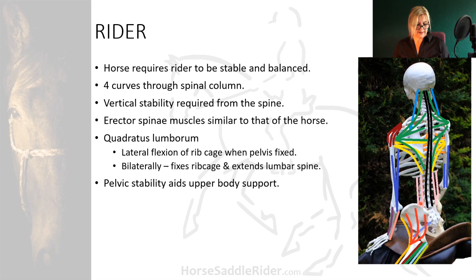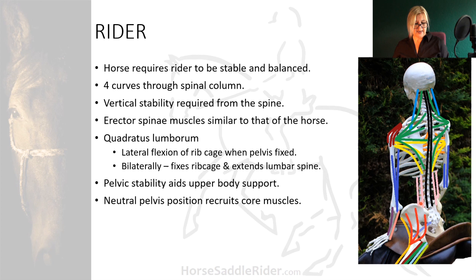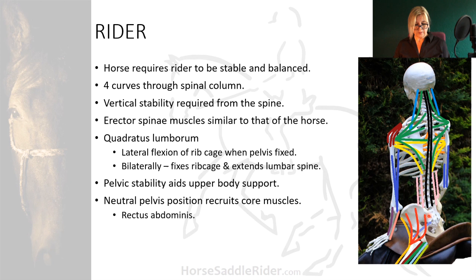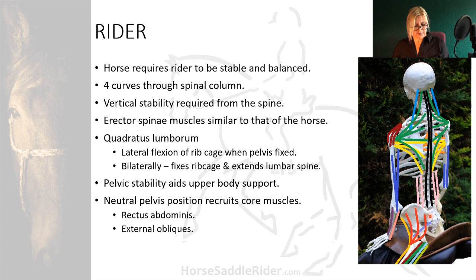Pelvic stability in the saddle will aid upper body support to maintain a vertical spine, and adopting a neutral pelvis position will instantaneously and reflexively recruit core muscles. If the pelvis is positioned in the saddle in such a way as to help recruit those muscles, the rider will be supremely stable. Rectus abdominis and the external obliques are the core muscles of the rider. Finding and maintaining that neutral position is challenging, but once found, equitation skills can take on a whole new level, making the rider easier for the horse to carry with less noise from aberrant body movement.